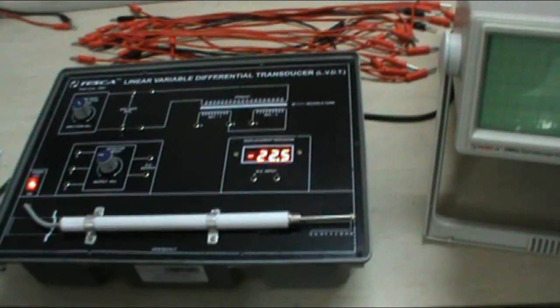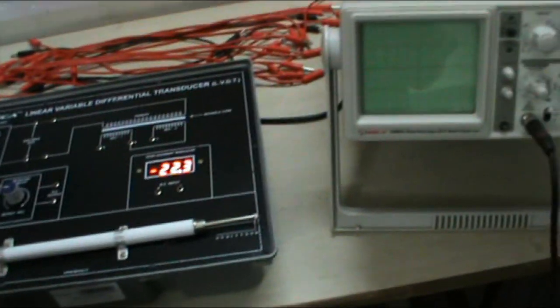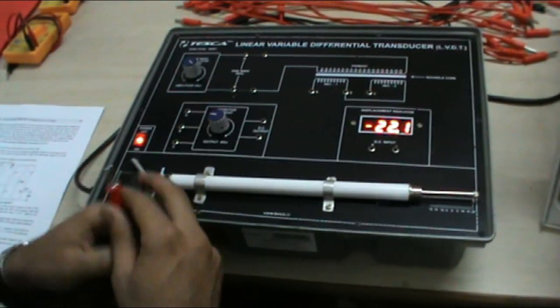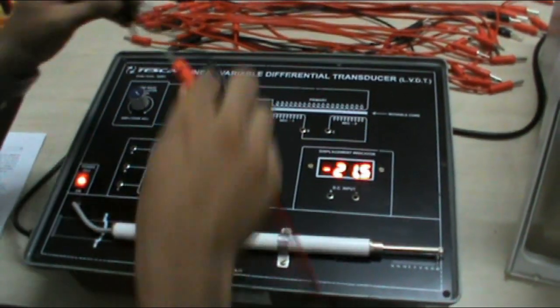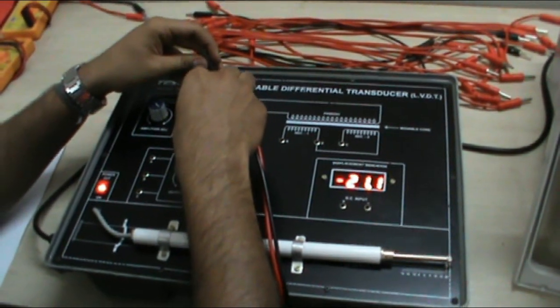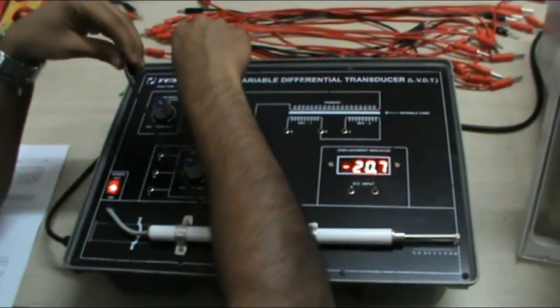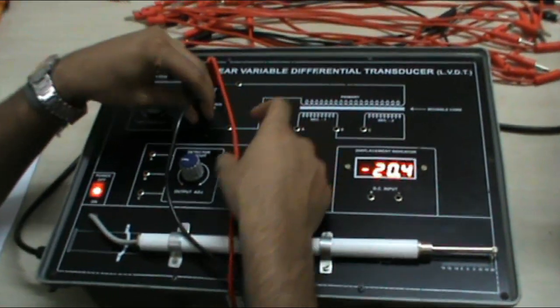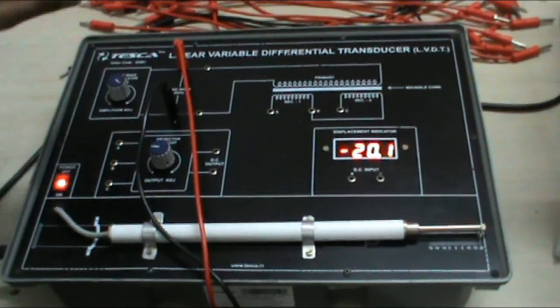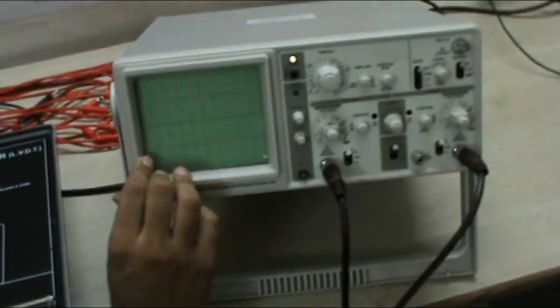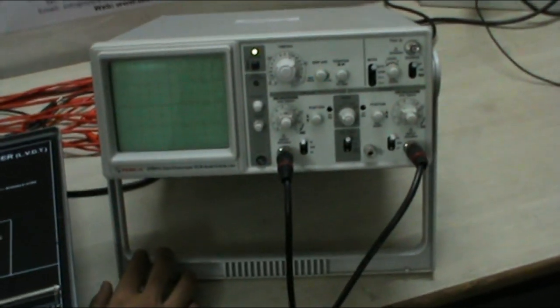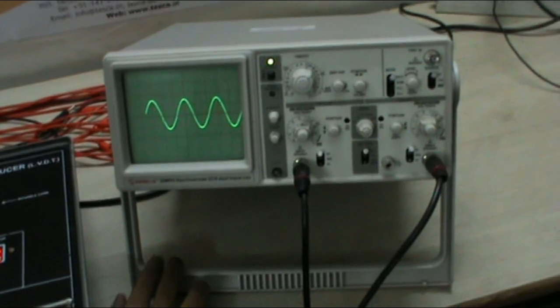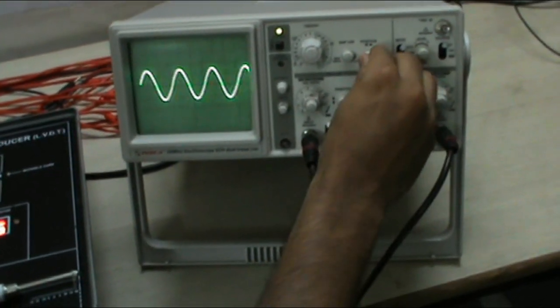Connect a CRO cable and connect channel 1 of CRO to measure the sine wave 4kHz. Connect this CRO cable with this and see a sine wave 4kHz on the CRO. On channel 1 as you can see.